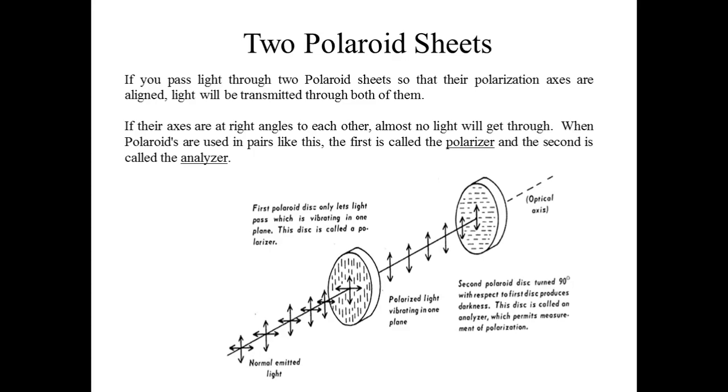If their axes are at right angles to each other, almost no light will get through. When polaroids are used in pairs like this, with one at a right angle to another, the second polarizer is called the analyzer.